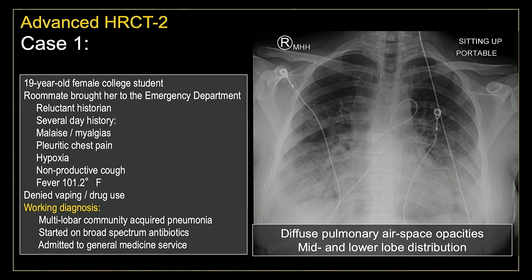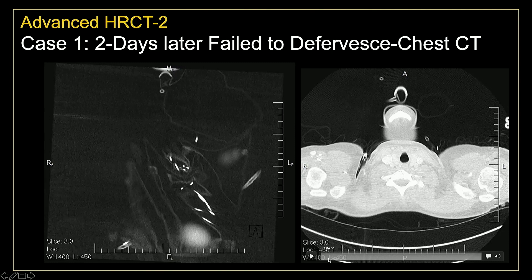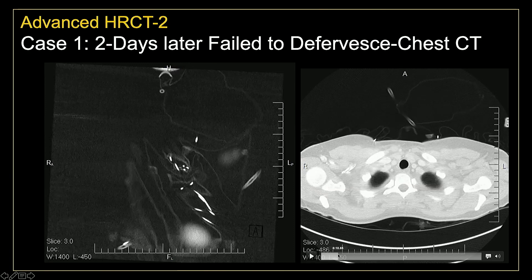She had hypoxia in the ER, was experiencing a non-productive cough, and was febrile up to 101.2 degrees. She denied vaping. She denied drug use. On her chest x-ray, you can see diffuse pulmonary airspace opacities with a mid- and lower lung zone predominance, and based on her presentation and the x-ray, our working diagnosis was that of a multilobar community-acquired pneumonia. She was started on broad-spectrum antibiotics. Over the next couple of days, she failed to improve, and they elected to proceed with a CT examination. In this setting, the patient typically is not going to get an HRCT scan — they're too sick. They'll get a routine CT or, as in this case, a pulmonary embolism CT examination. The PE phase was pretty unremarkable, but the lung windows are quite interesting.